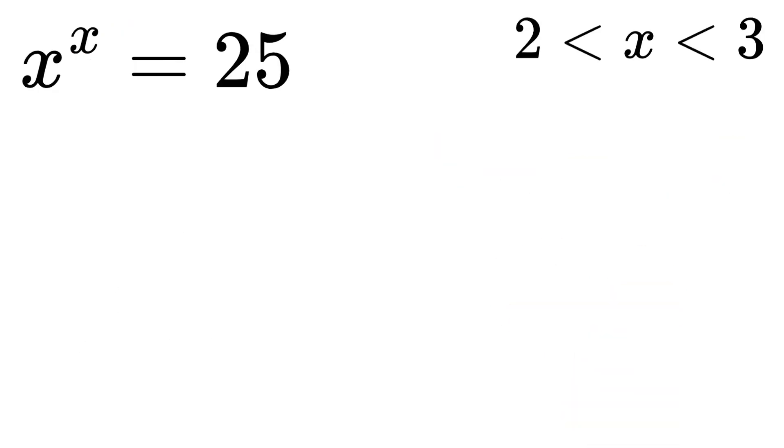To solve this equation, let's take the natural logarithm on both sides. We start with x raised to the power of x equals 25. This gives us the natural logarithm of x raised to the power of x equals the natural logarithm of 25.